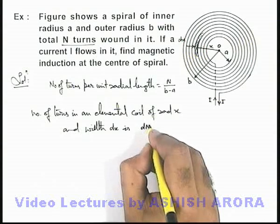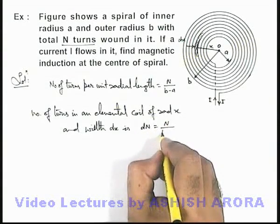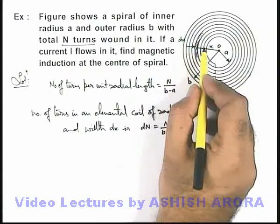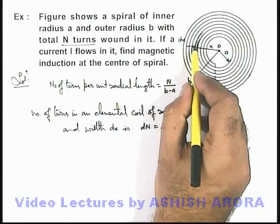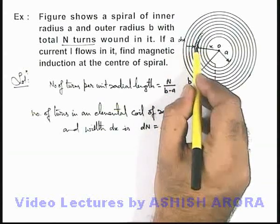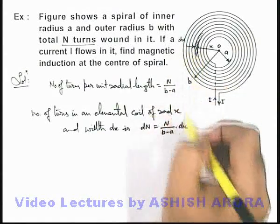This can be written as dN that will be N/(b-a) into dx, because in the length b minus a there are N turns, so in the radial length dx, number of turns will be N/(b-a) into dx.